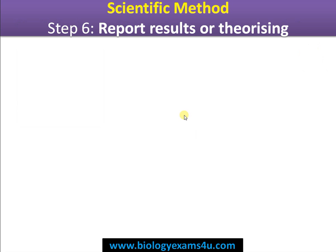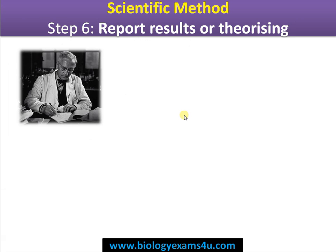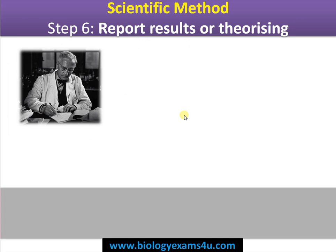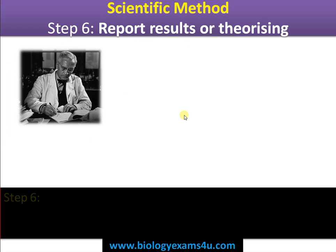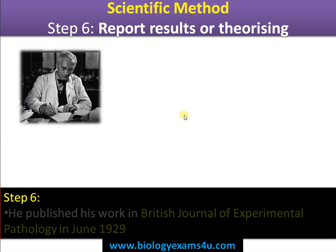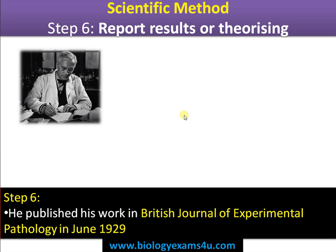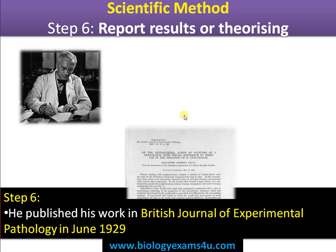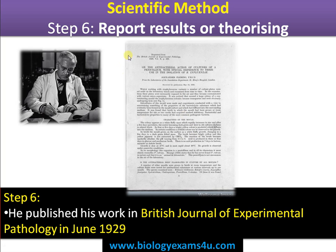Finally, Step 6 is reporting results, making a theory, or publishing the result. Fleming published his work in 1929 in the British Journal of Experimental Pathology, and this was his original paper.